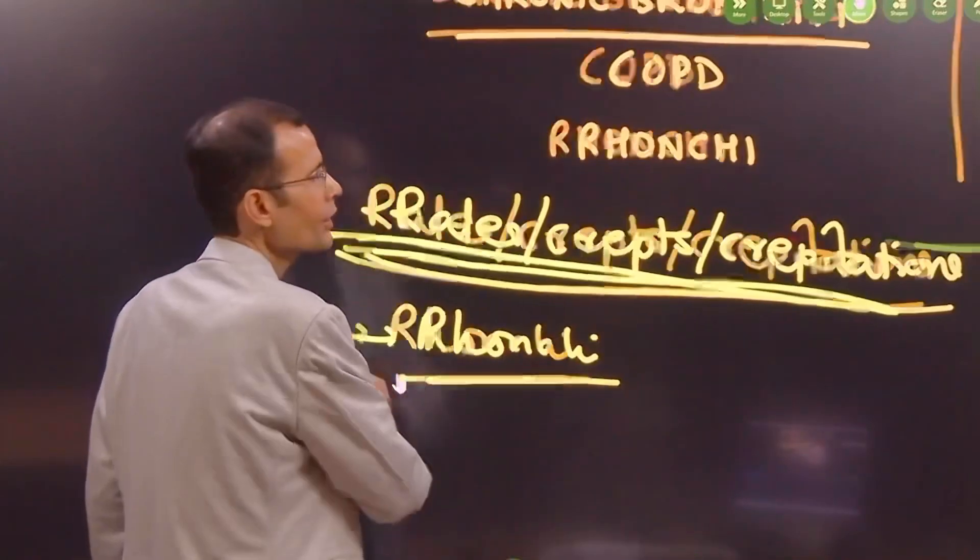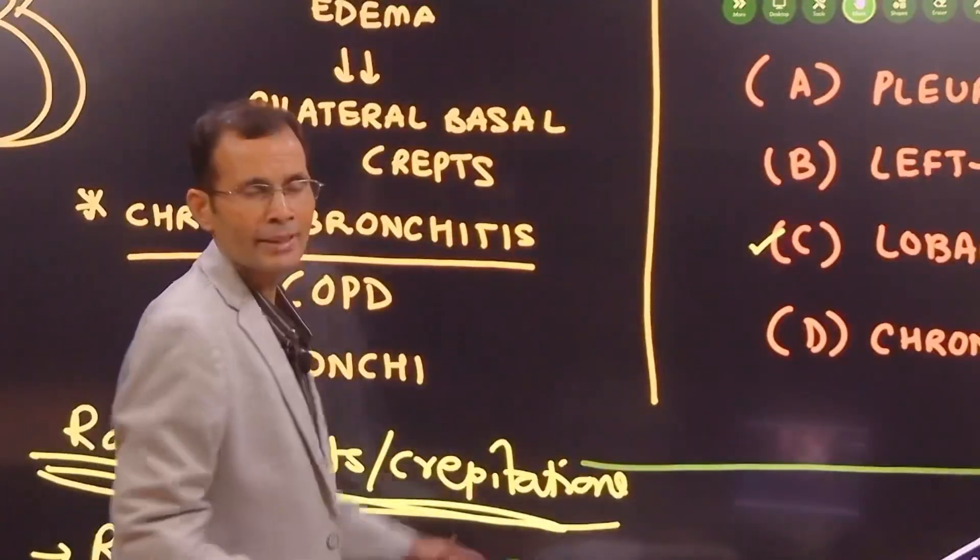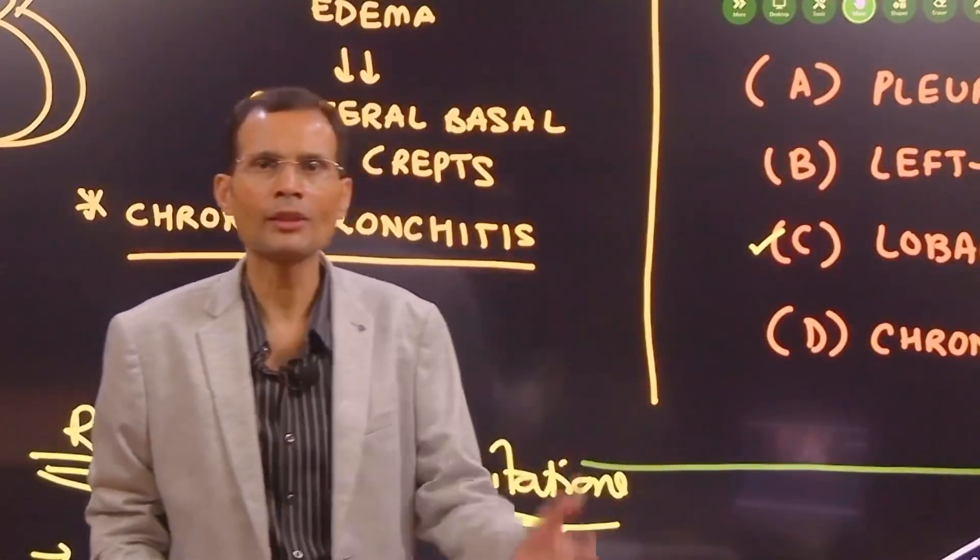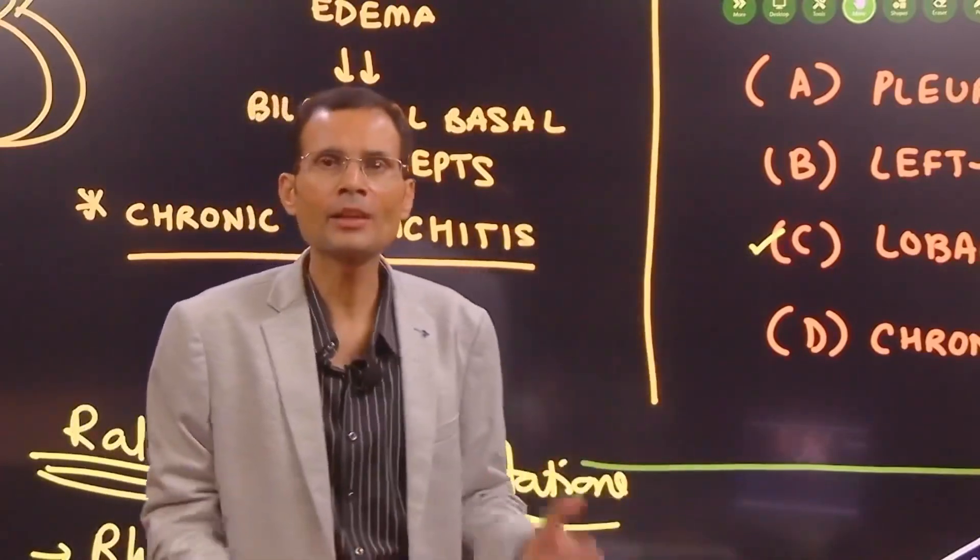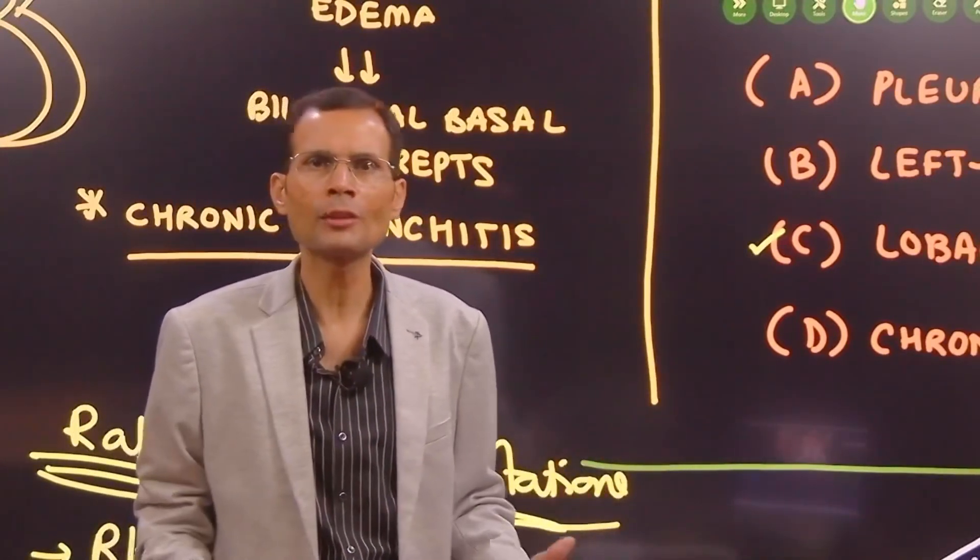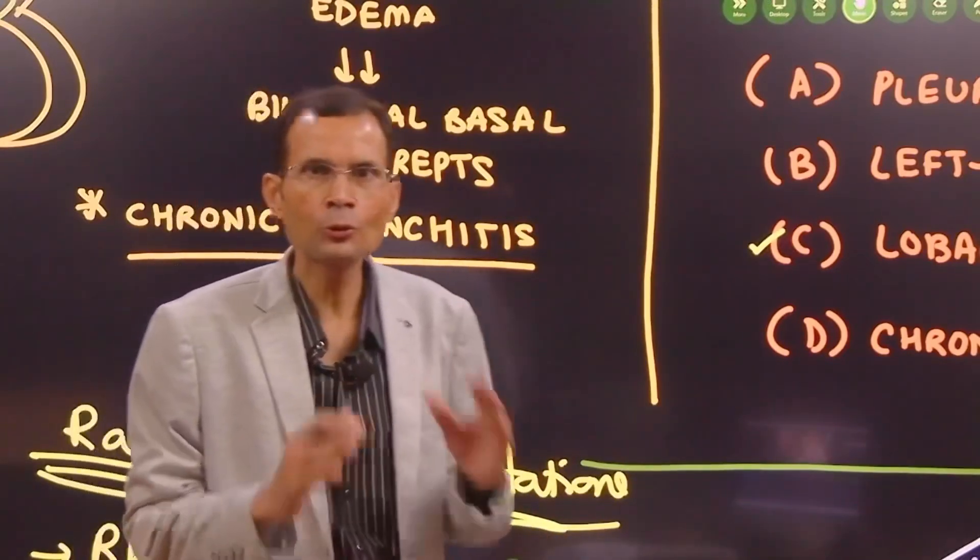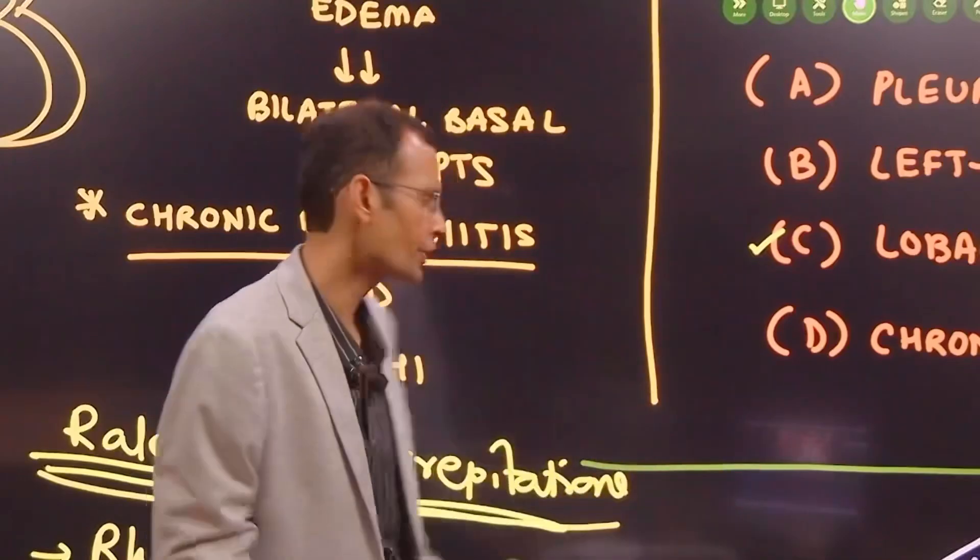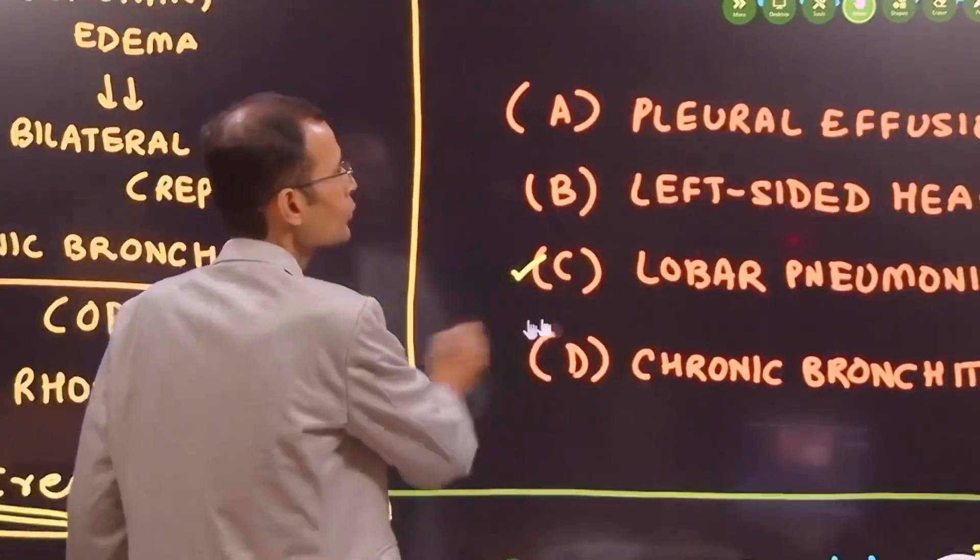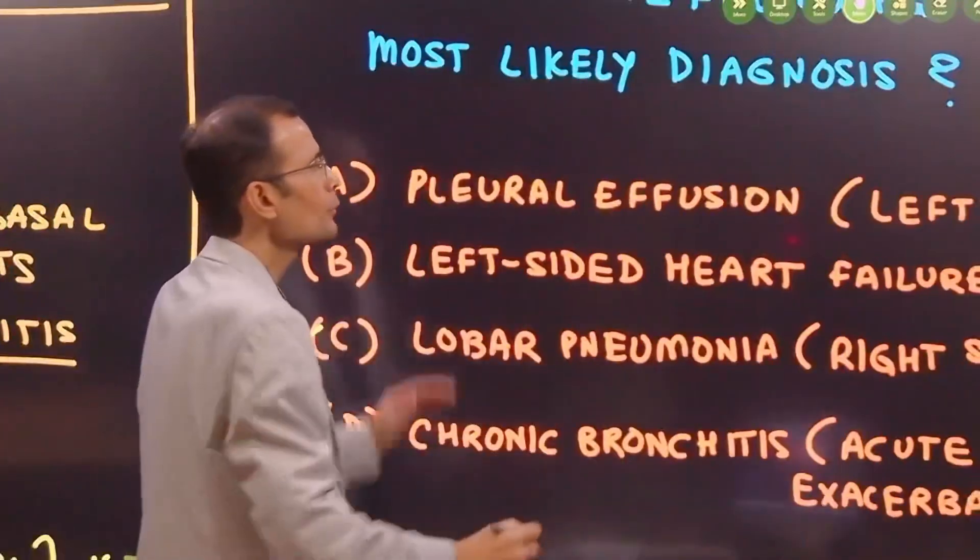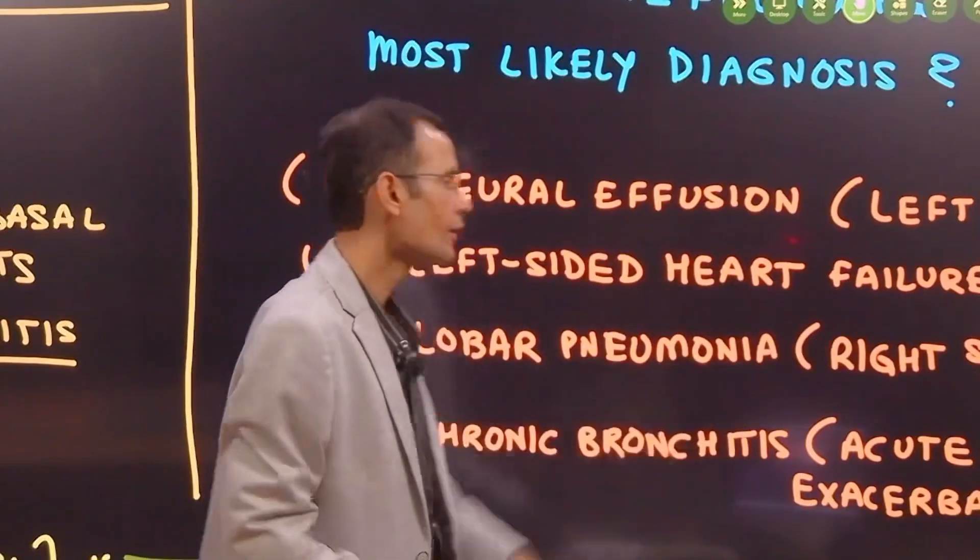Which is not mentioned here. Therefore we can rule out - see, chronic bronchitis was mentioned with acute exacerbation because there was mild breathlessness and fever, cough with sputum, so it could have been this, but we can rule it out. No ronchi mentioned here.